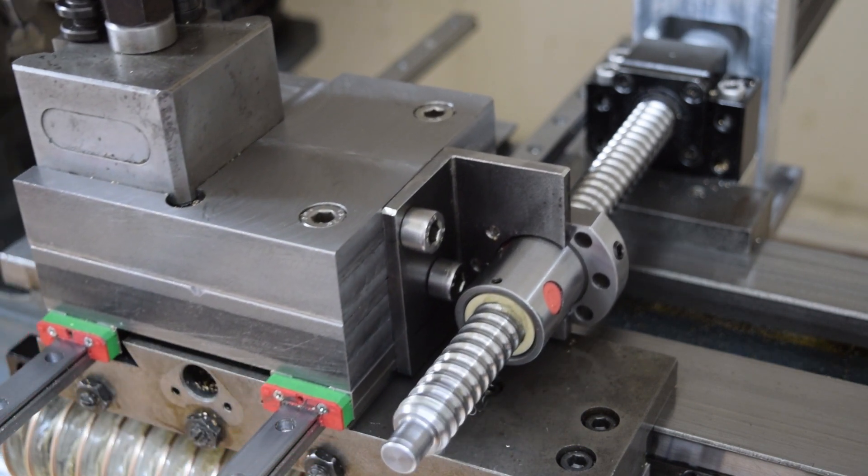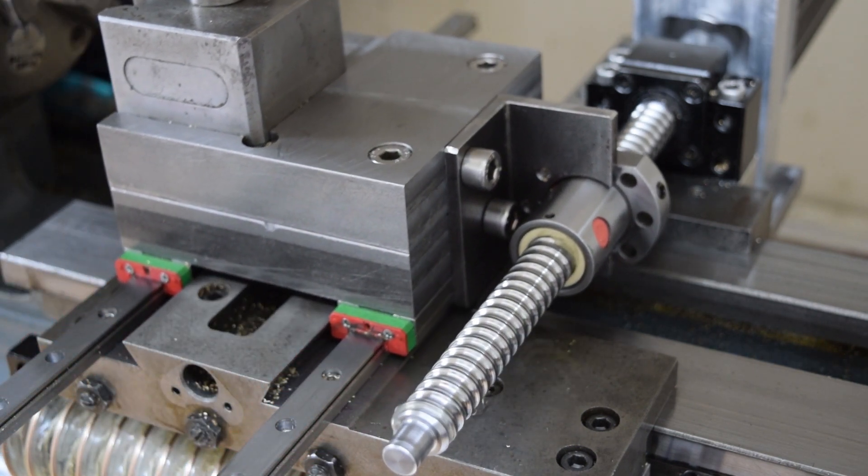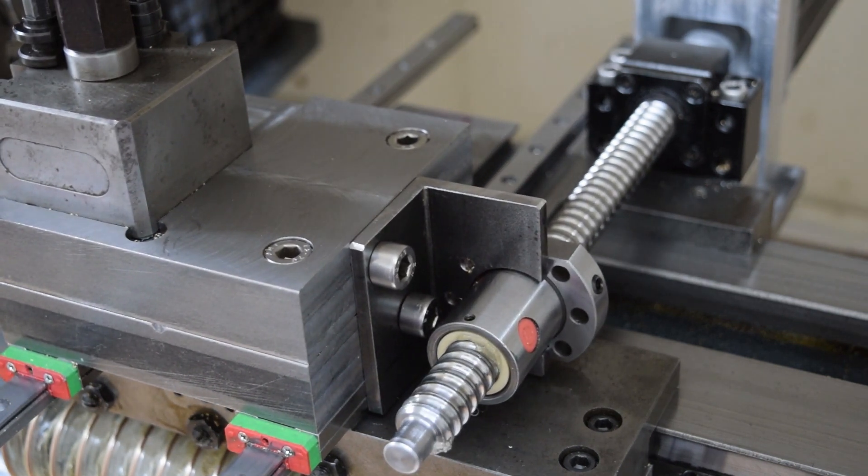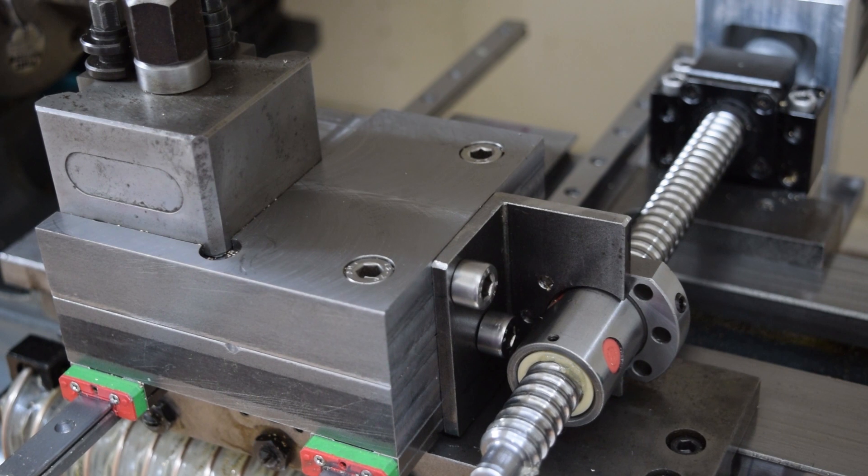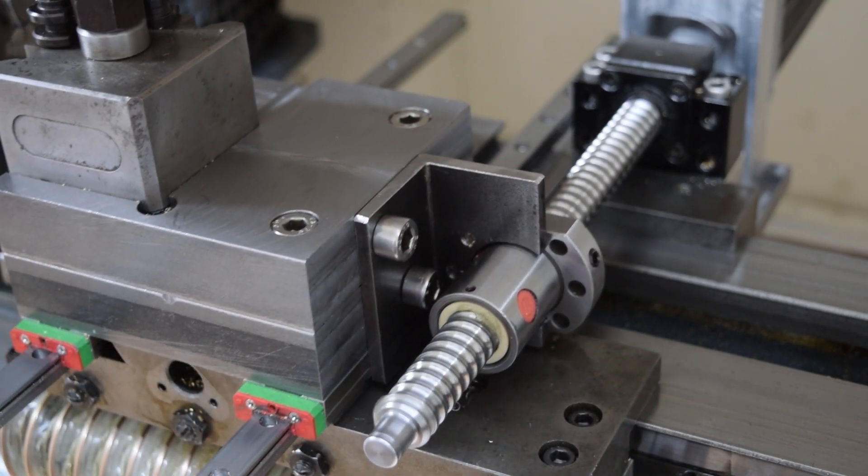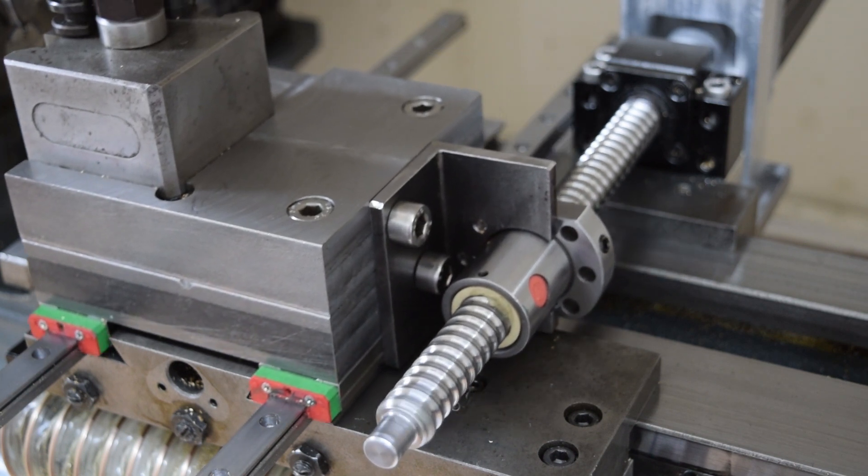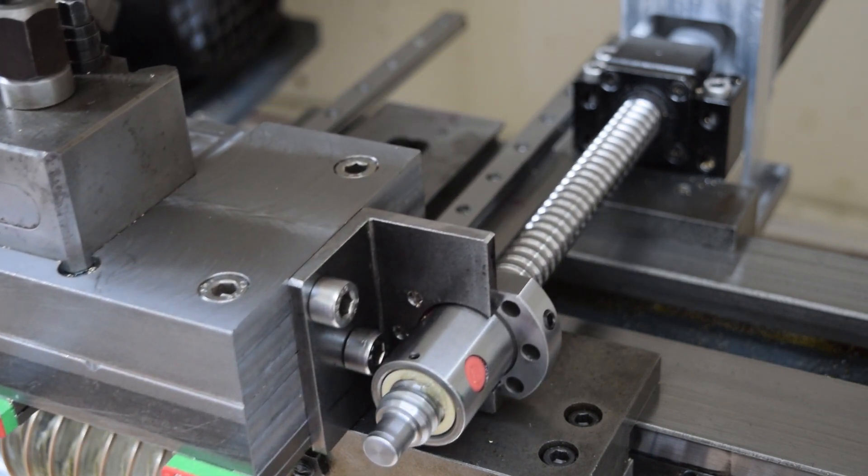With the X-axis ball screw in place, you can see how it runs on the rails. I decided to remove the second bearing block from the front of the X-axis. It was just unnecessary. You can see it centers quite nicely.